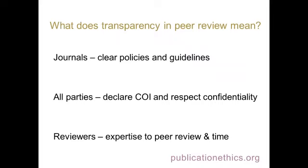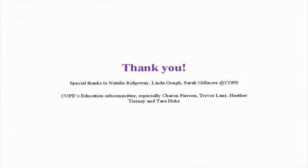What does transparency in peer review mean? From a BMC perspective it might be narrow — specifically about the model the journal operates. But at COPE, we believe it's about trust and willingness for all parties to operate with transparency and integrity. For journals, it means clear policies and guidelines for editors, reviewers, and authors to declare conflicts of interest and respect confidentiality — not releasing anything beyond what the journal would want them to release. For reviewers, it means being transparent about the expertise you have and the time available to do peer review. Thank you to the folks at COPE who make things happen: Natalie, Linda, Sarah, and the Education Subcommittee — particularly Sharon, Trevor, Heather, and Tara.